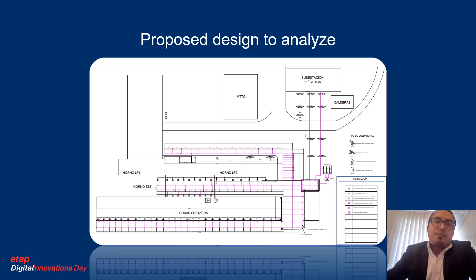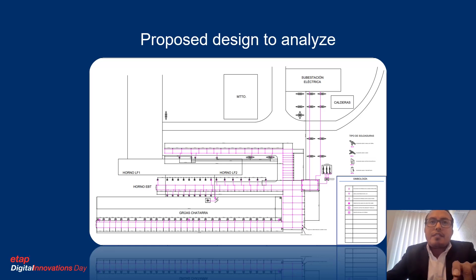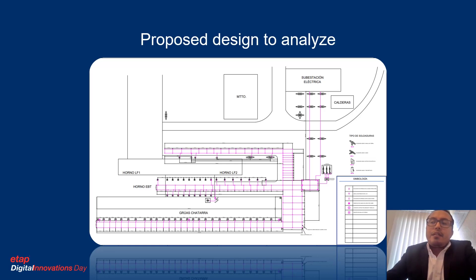The ground grid was proposed to be built around the furnace building and around the scrap site. In this picture, you can see the buildings labeled ORNO, which is furnace, LF1, and EPT — which are the actual furnaces of the plant. The main electric substation is also represented here.